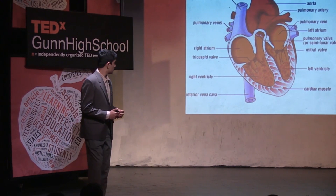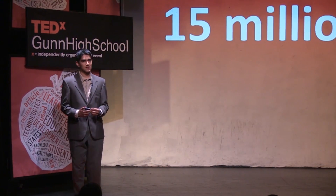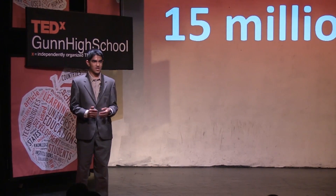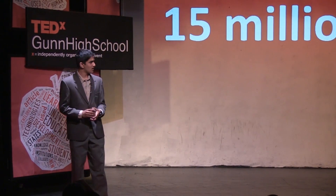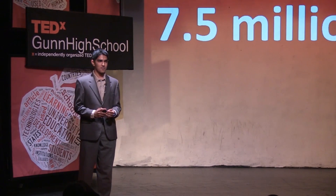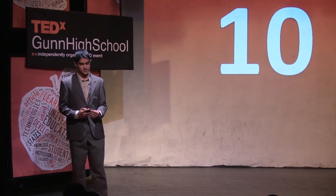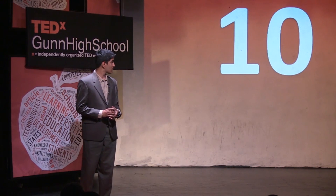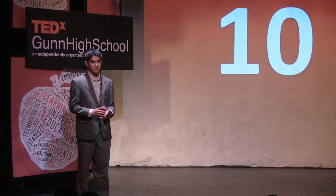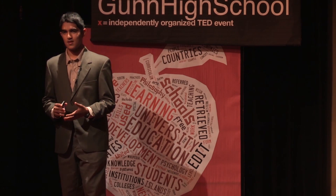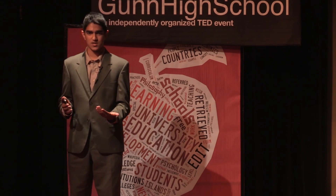From the National Center for Educational Statistics, there are about 15 million high school students in the United States and about half of them play sports. This number — 10 — is the number of high school athletes that die every month suddenly on the field. This may be small compared to other death statistics, but these are athletes playing the sport they love, and it affects the entire community.